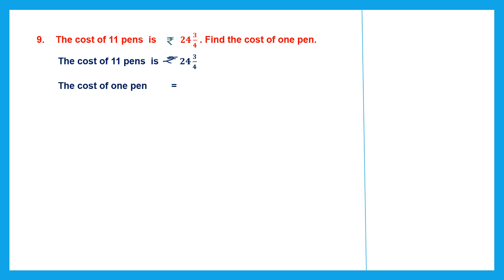To find the cost of one pen we have to divide. We have to divide 24 and 3 by 4 by 11. The first step is we have to do the conversion — we have to convert 24 and 3 by 4 into an improper fraction. So multiply 24 by 4: 4 fours are 16 carry 1, 4 twos are 8 plus 1 is 9. Then we add the numerator 3 to it.